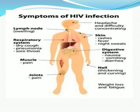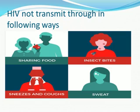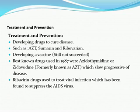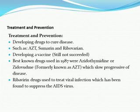HIV is not transmitted through the following ways: sharing food, insect bites, sweating, saliva, and coughing. For treatment and prevention of HIV or AIDS: drugs being developed include AZT, Suramin, and Ribavirin. A vaccine is still not yet succeeded. A drug used since 1987, azidothymidine — formerly known as AZT — slows the progression of the disease. Ribavirin is used to treat viral infections and has been found to suppress the AIDS virus.